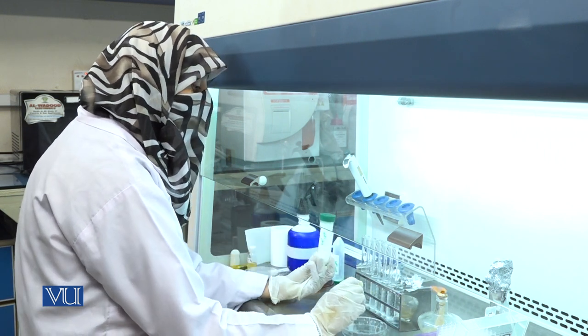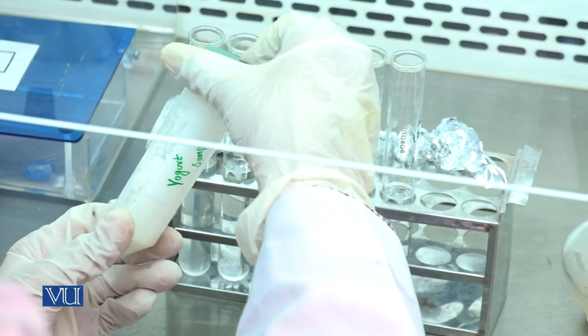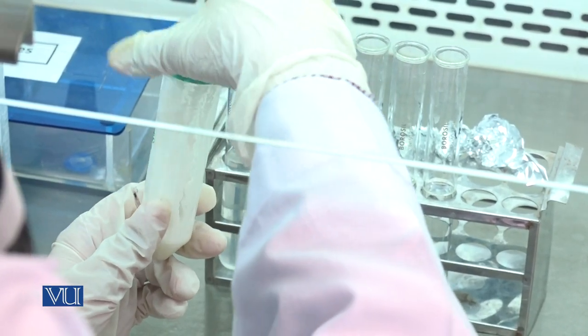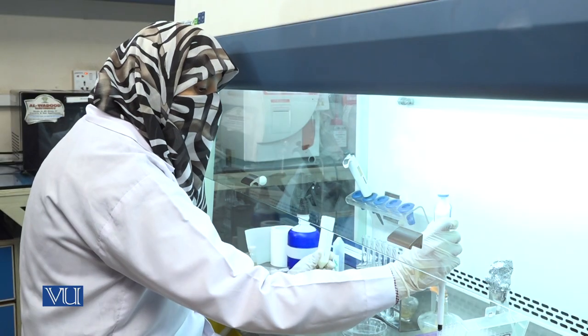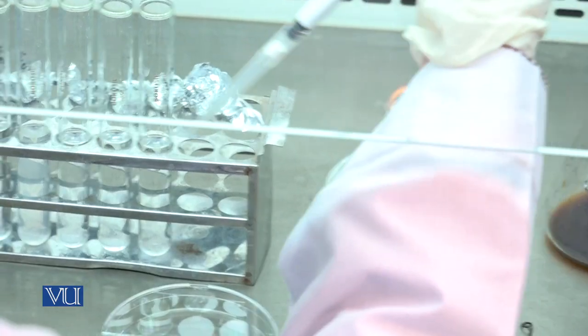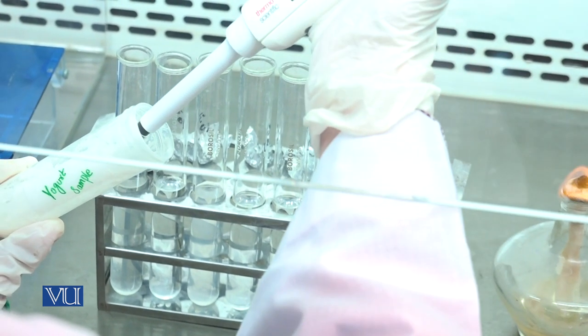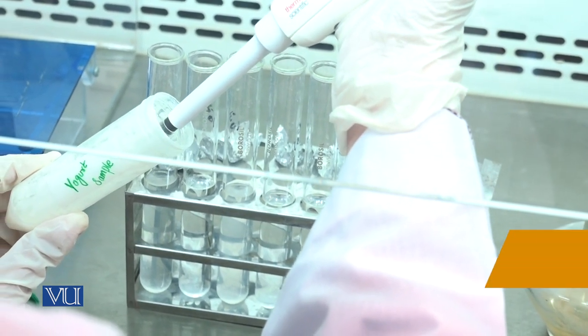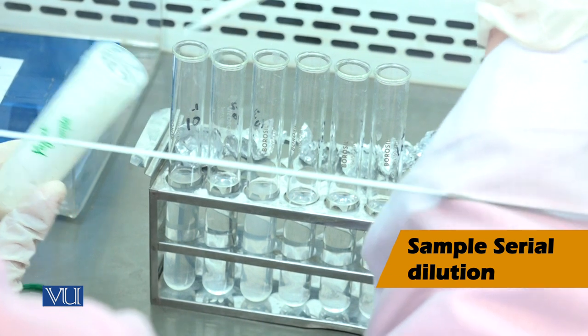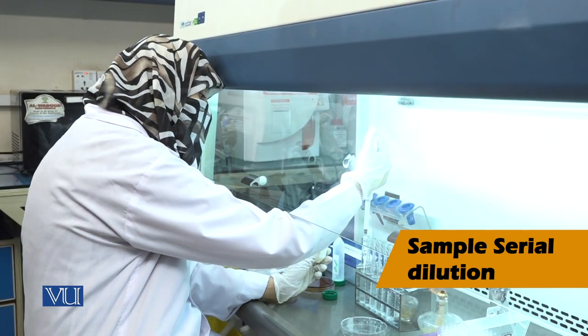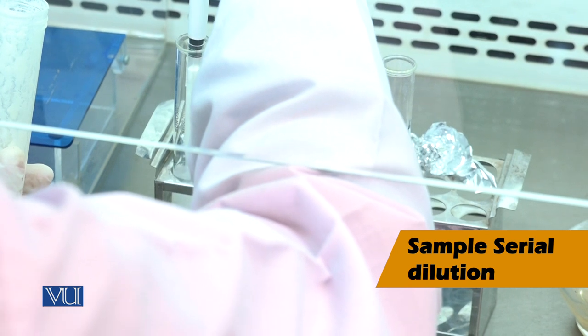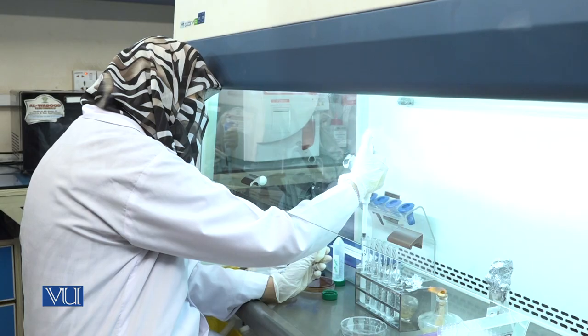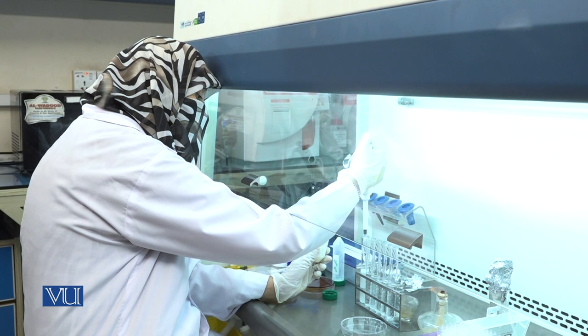First collect sample and dilute in 1 to 10 ratio in normal saline solution. Now pick 1 ml yogurt solution and add into first test tube containing 9 ml distilled water. Mix it properly.